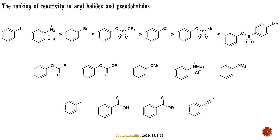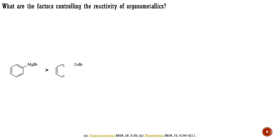The concluding part of this lecture will feature selected examples. Now, let's discuss organometallic coupling partners. The primary factor controlling their reactivity is the electronegativity of the metal. The less electronegative the metal, the more nucleophilic the organic subunit connected to the metal becomes. This, in turn, facilitates a more straightforward transmetallation.